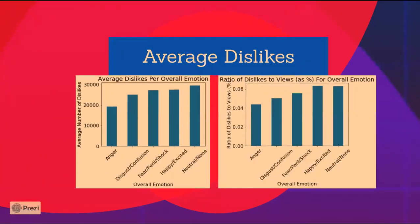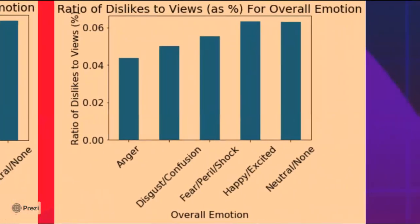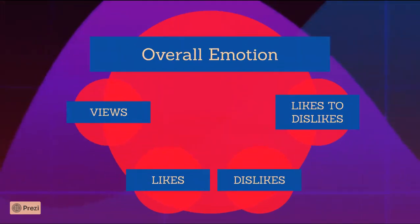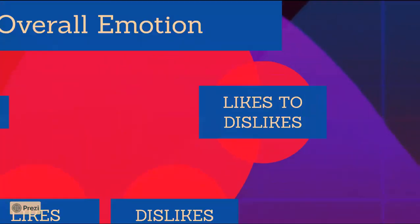I then plotted the average dislikes per overall emotion. Interestingly, neutral/none had the highest average dislikes, even though it didn't have the corresponding highest average likes. Anger still has the least dislikes. So even though videos with angry or happy/excited thumbnails have similar average views, happy/excited gets more engagement in terms of more likes and dislikes. The ratio of likes+dislikes to views shows neutral/none and happy/excited have the two biggest ratios, while anger and disgust/confusion have the two lowest. Finally, the ratio of likes to dislikes shows happy/excited has the highest ratio. So if you're looking to optimize for likes, definitely consider having happy/excited as the overall emotion for your thumbnail.